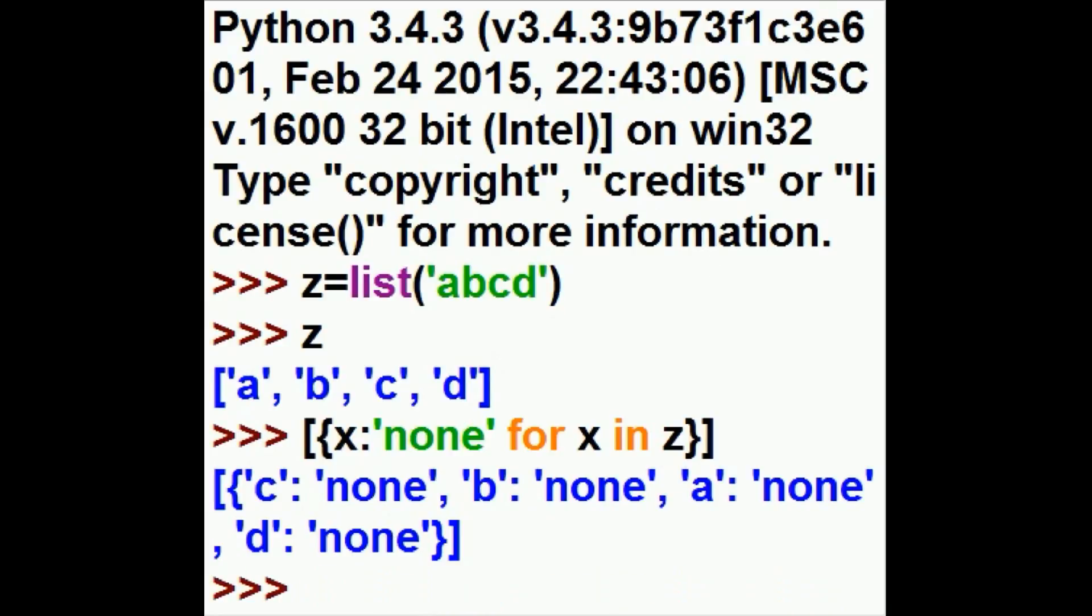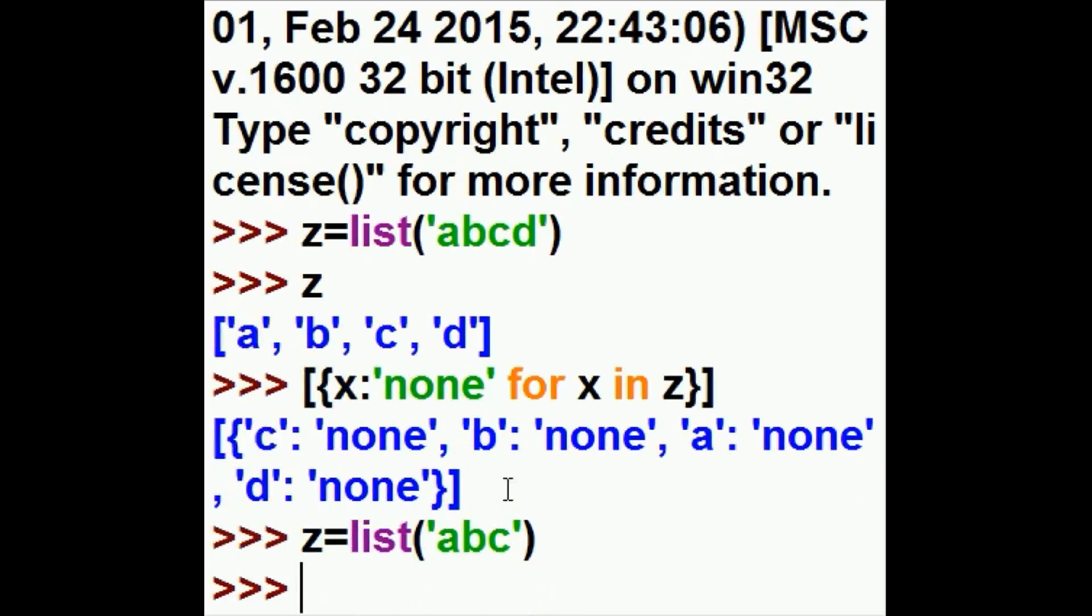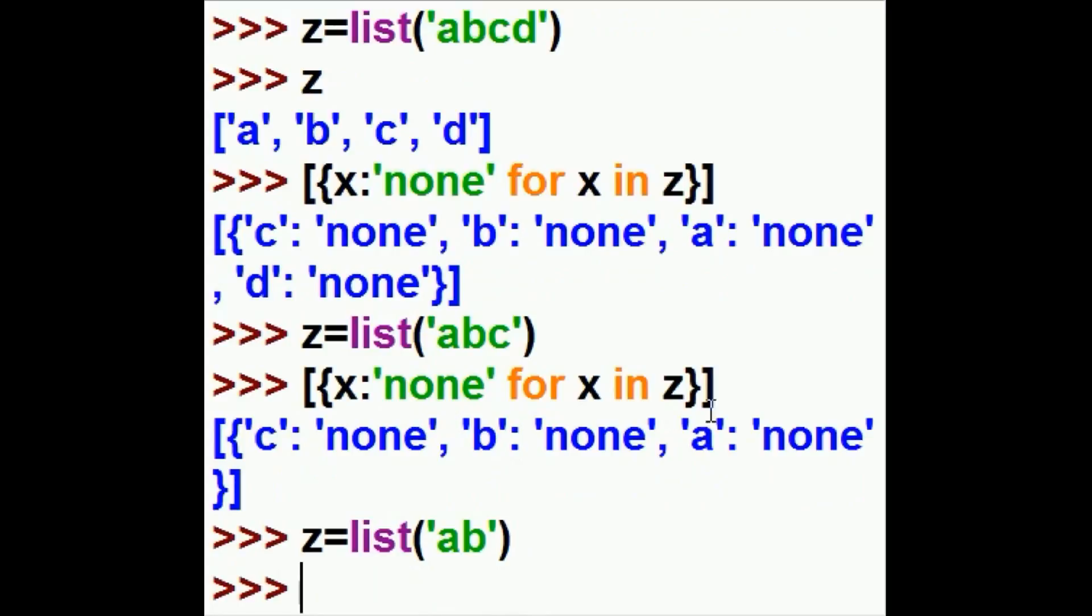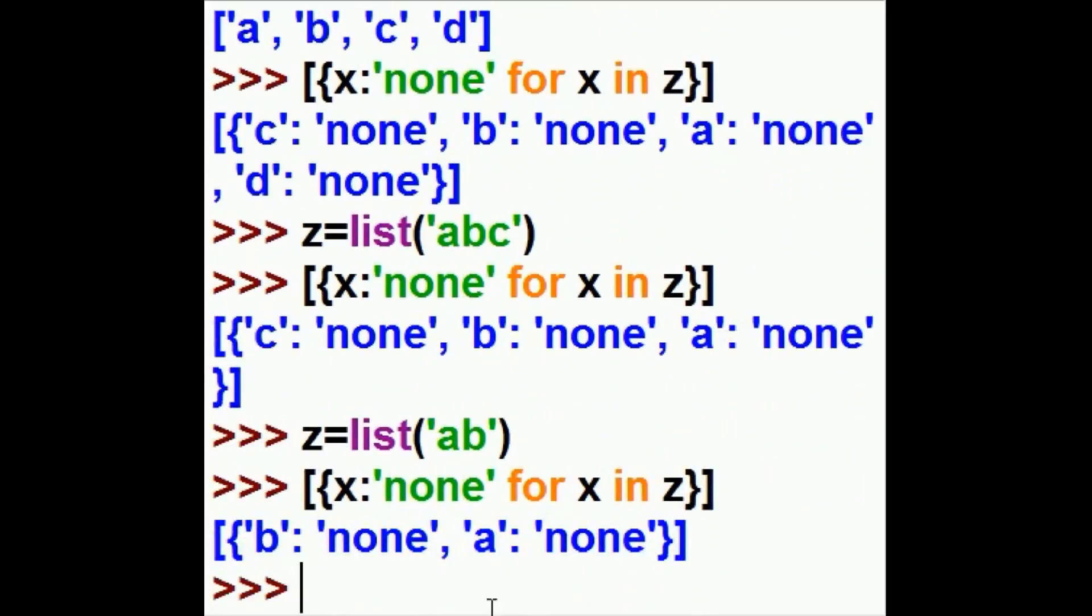Now I'd like to make this smaller so it can fit on the screen a little better. I'll get rid of that D there and run the comprehension again. Still a little too big for the screen. Let's get rid of this C. Good. And then we'll do the comprehension. A none, B none.